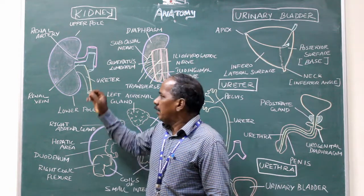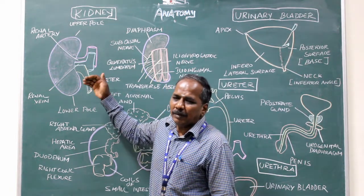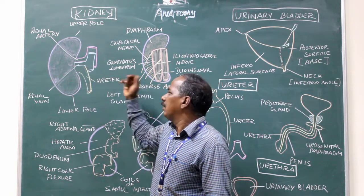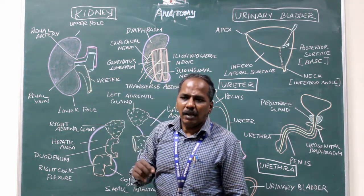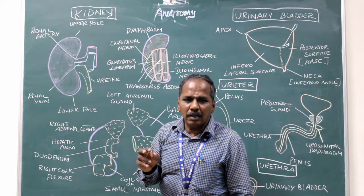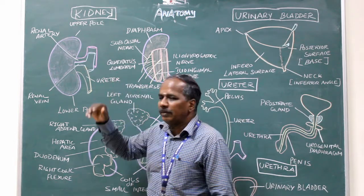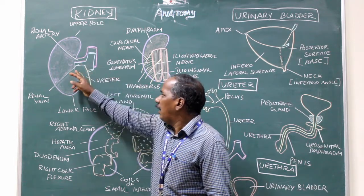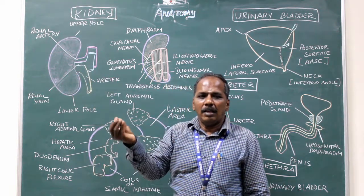What are the structures which enter the hilum and which exit the hilum? The renal artery and the sympathetic plexus surrounding the renal artery enter the hilum, while the renal vein and the ureter exit.